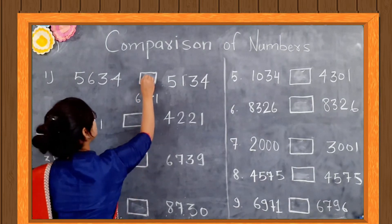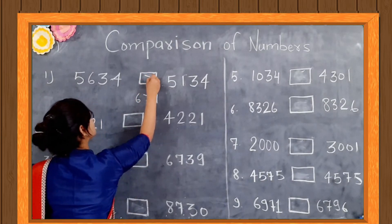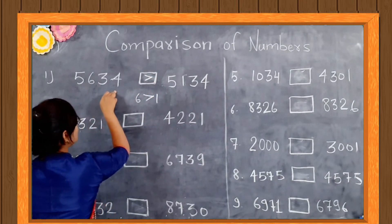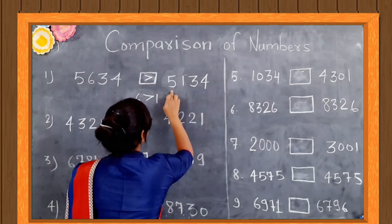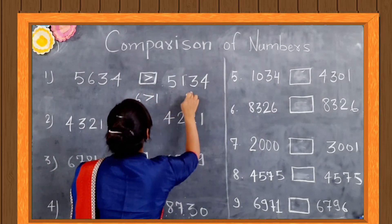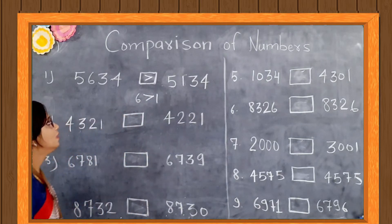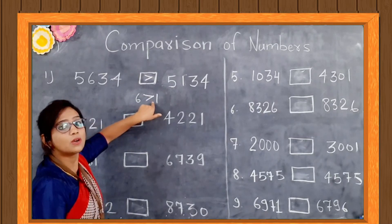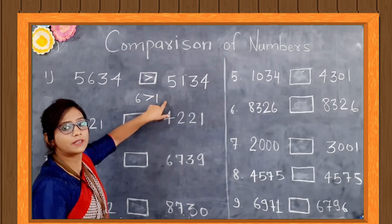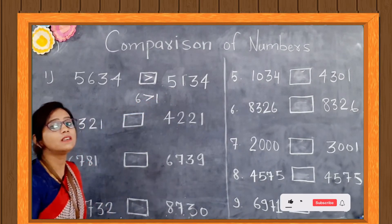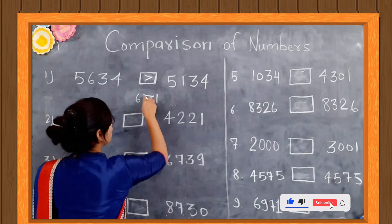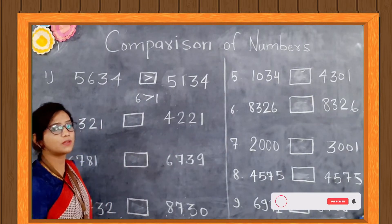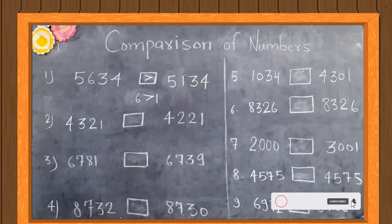So this number is bigger: 5,634 is greater than 5,134. We already know the open side of the sign always points towards the greater number, and the closed side always points towards the smaller number. Let's try more examples.